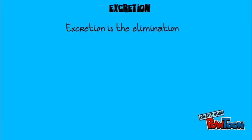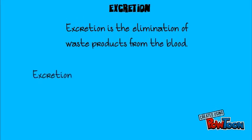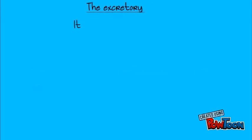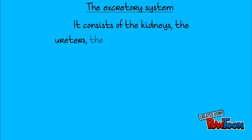Excretion. Excretion is the elimination of waste products from the blood. Excretion takes place in the excretory system, the respiratory system, and the sweat glands. The excretory system consists of the kidneys, the ureters, the bladder, and the urethra.